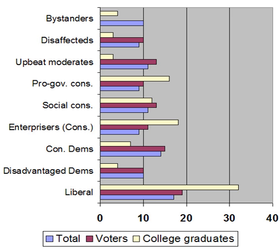Ideological groups are distinguished by societal attributes such as religion, marital status, education, and gun ownership, yet are relatively similar in terms of race and ethnicity. Generally, liberals were more likely to be secular, single, and in possession of a college degree, while less likely to own a gun. Conservatives, most of whom adhere to social as well as fiscal conservatism, tended to be far more religious, more likely to be married, and more likely to own firearms. The majority of social conservatives and pro-government conservatives attended church services once a week. Of liberals, a plurality — 43% — attended church services seldom or never, compared to 25% of respondents overall.